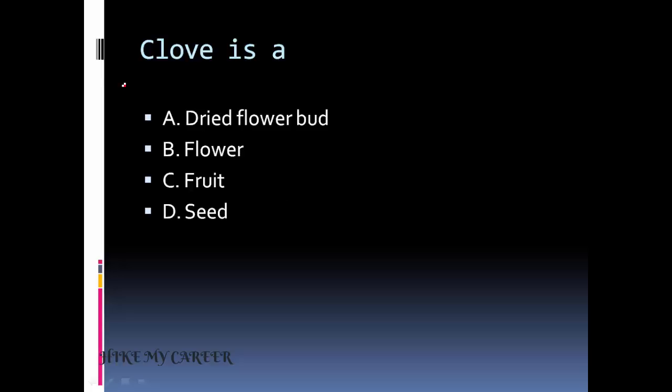Next question: clove is a - option one: dried flower bud, option two: flower, option three: fruit, option four: seed. Answer is option A, dried flower bud.